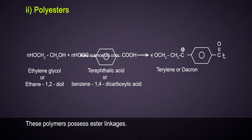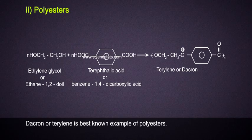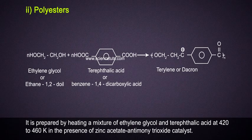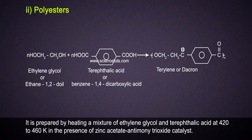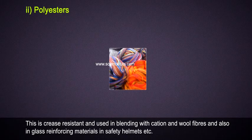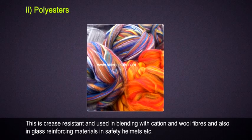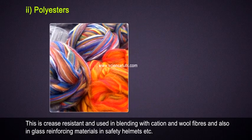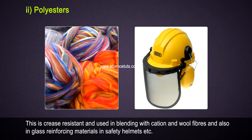Polyesters: These polymers possess ester linkages. Dacron or Terylene is the best known example of polyesters. It is prepared by heating a mixture of ethylene glycol and terephthalic acid at 420 to 460 Kelvin in the presence of zinc acetate and antimony trioxide catalyst. This is crease resistant and used in blending with cotton and wool fibers and also in glass reinforcing materials, in safety helmets, etc.